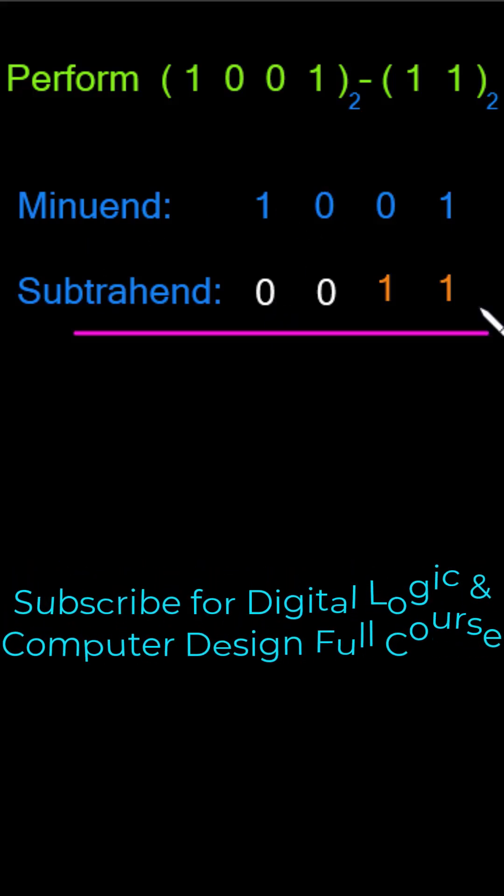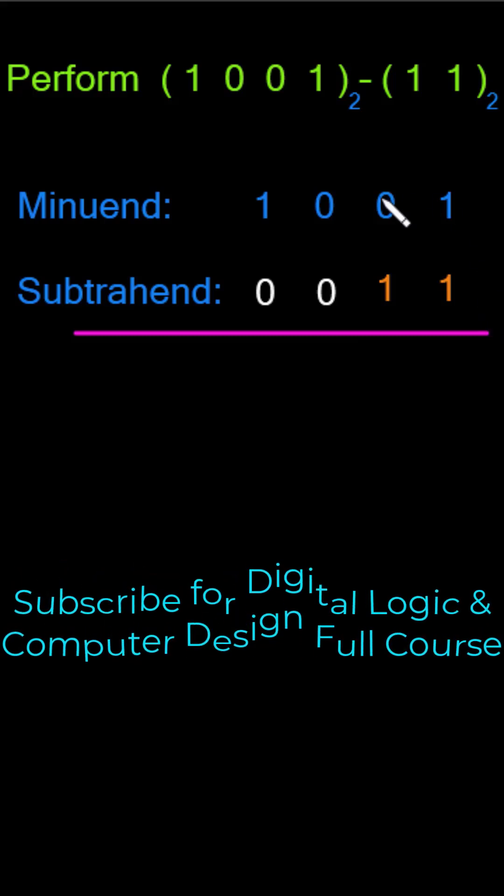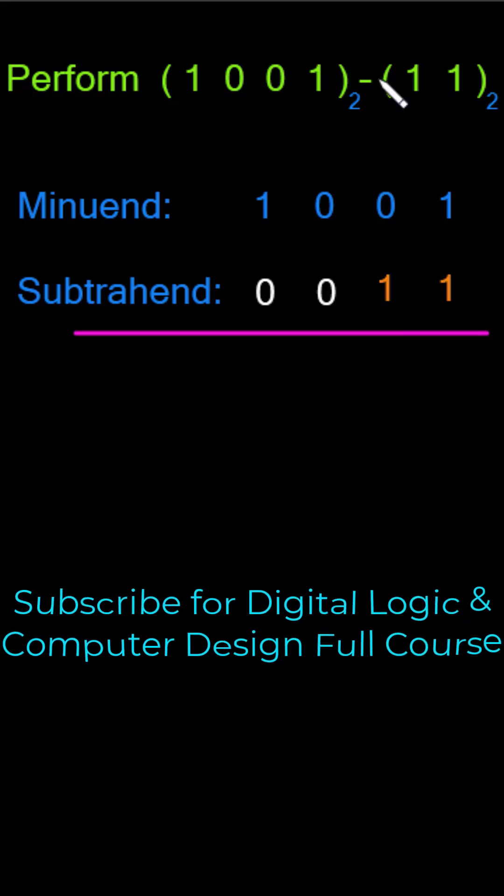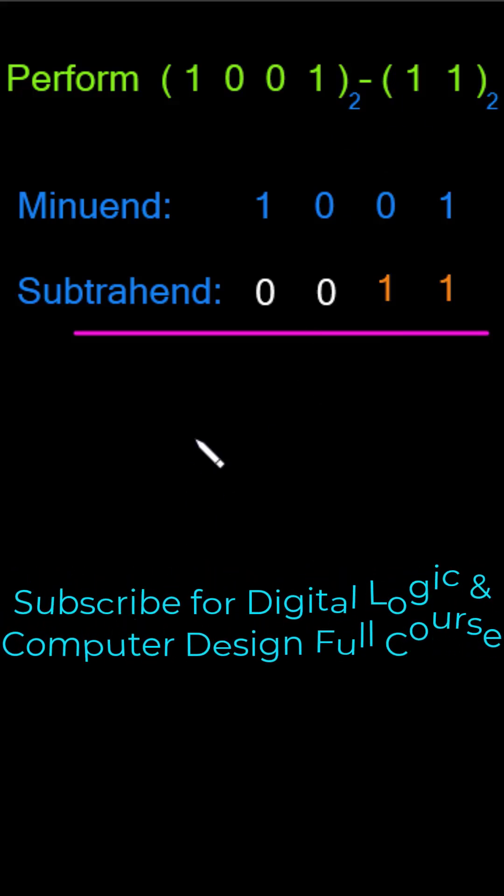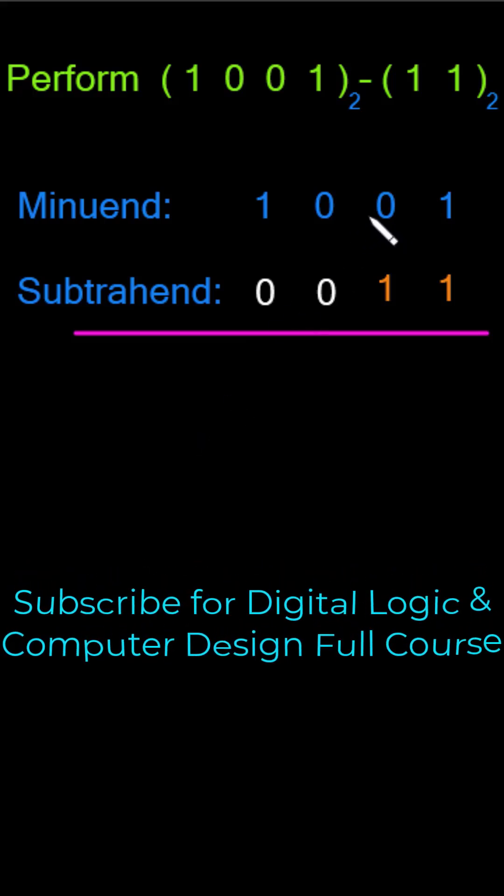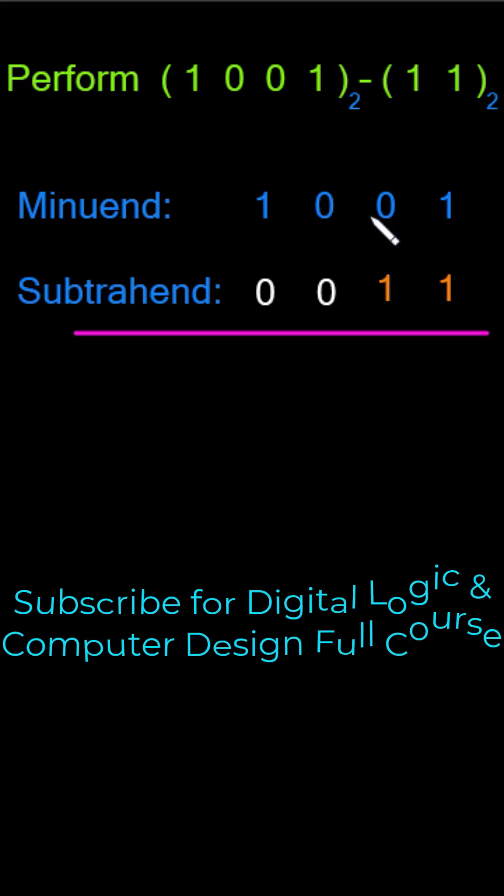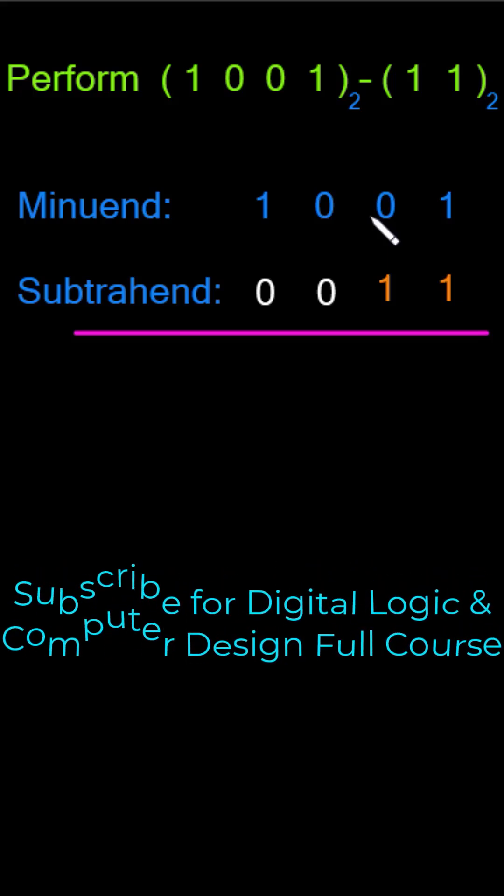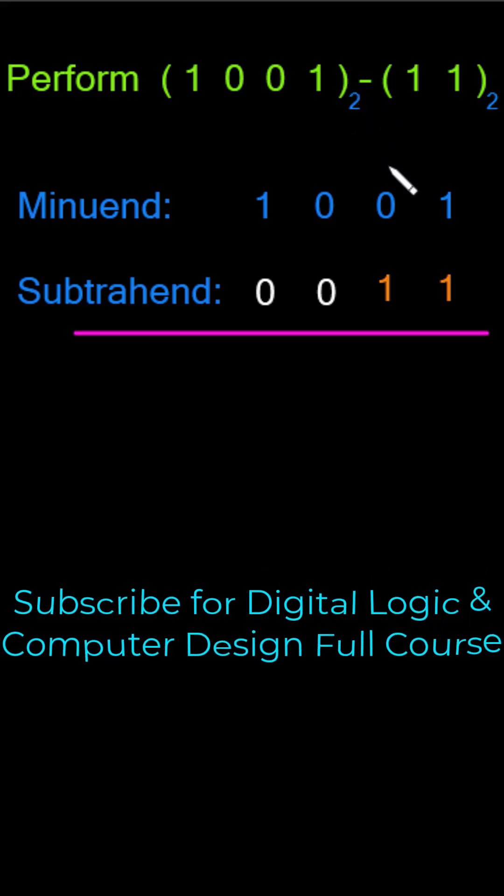Remember, borrowing one from the next column is equal to 2 in binary subtraction. We know from our school times that borrowing one from the next column to the present column in decimal numbers is equal to 10 because they have base 10. Here we have base 2, so borrowing one from the next column will give us 2 because of the base it has.